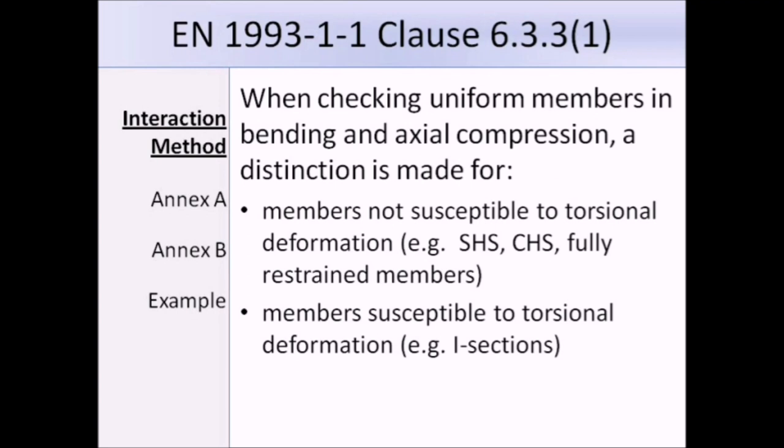Clause 6.3.3 Part 1 states that when checking uniform members in bending and axial compression, a distinction is made between members not susceptible to torsional deformation, like structural hollow sections, circular hollow sections and fully restrained members, and members susceptible to torsional deformation, for example I sections.